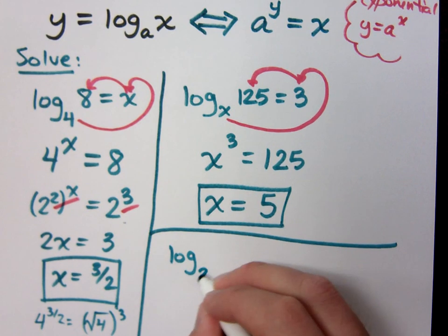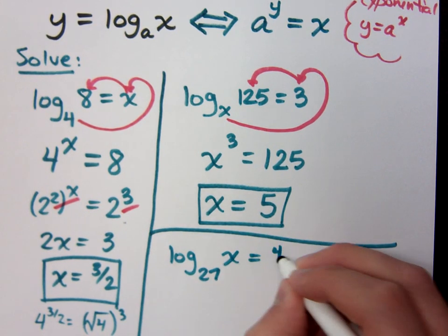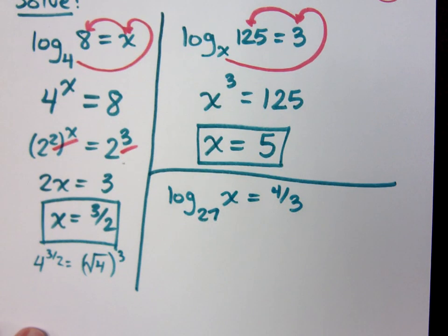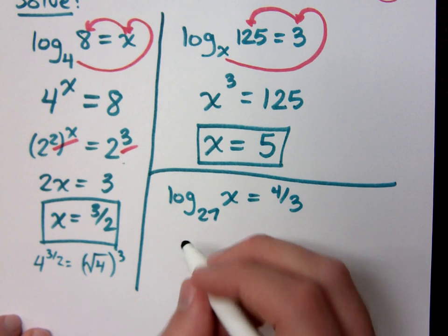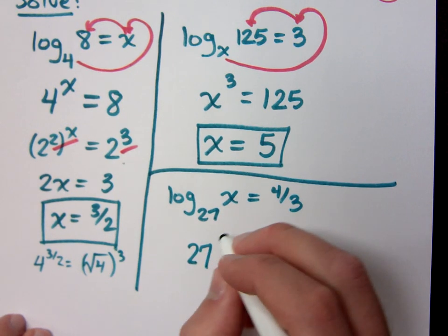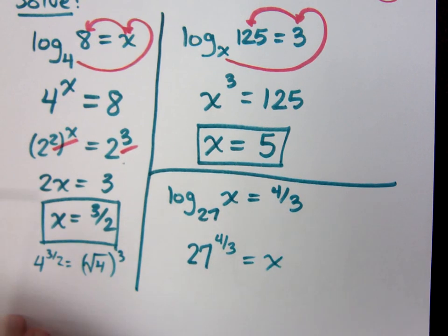I have log with base 27 of x is equal to 4/3. How am I going to rewrite this guy? The cube root of 27 to the 4/3 is equal to x. Well, first, let's say 27 to the 4/3 power equals x. How did you get that? Well, using that technical term, we do the loopy loop, right?